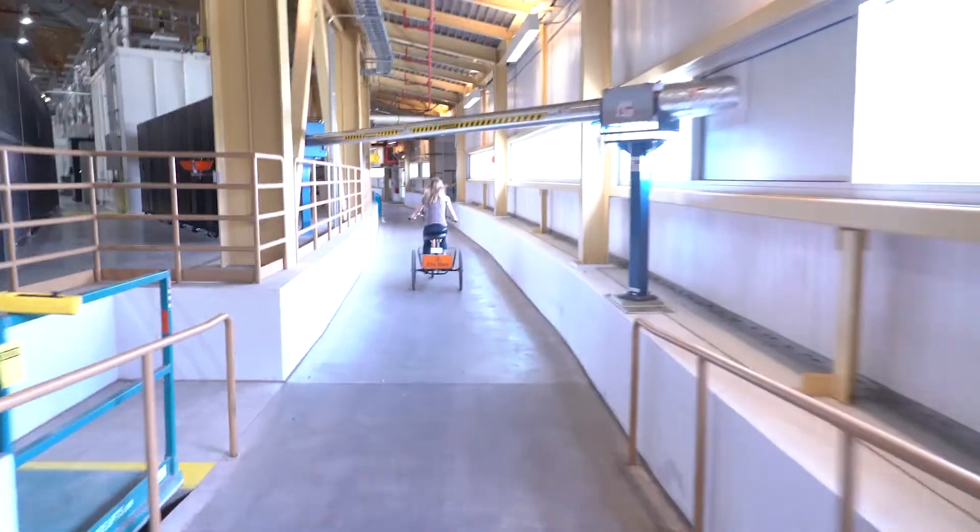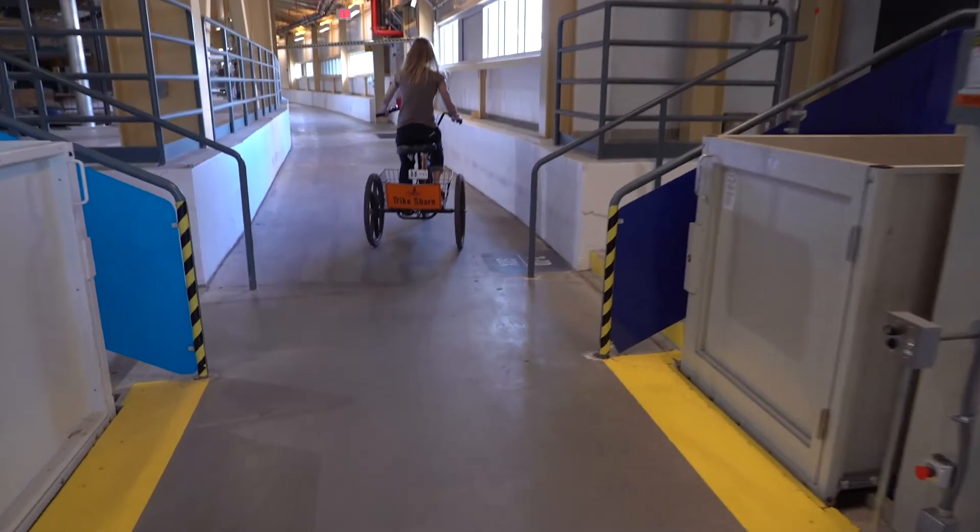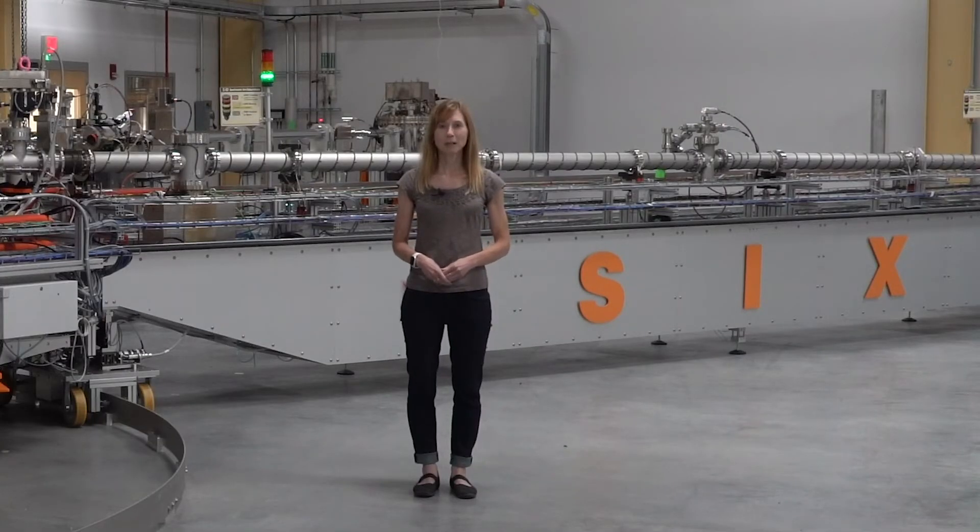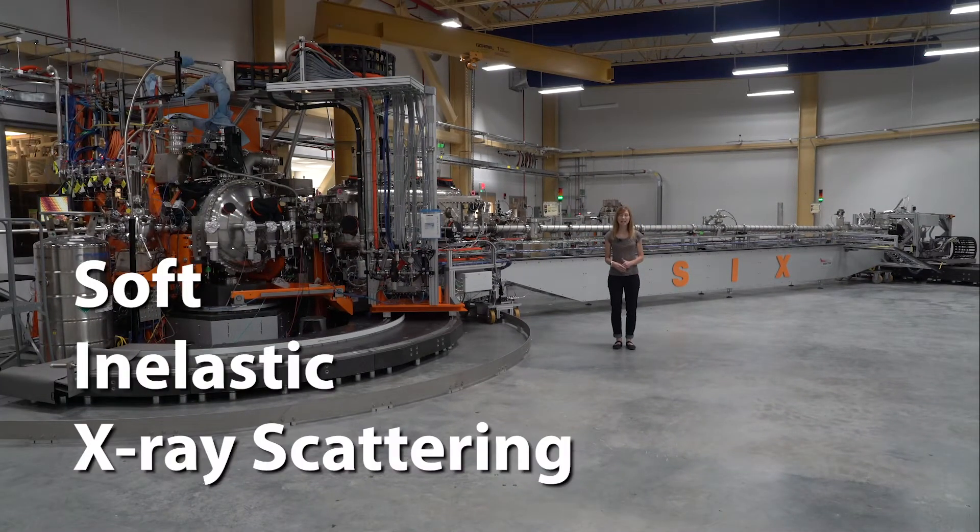So those are just some examples of how the x-ray fluorescence microscope beamline works. Now let's move on to our next beamline.